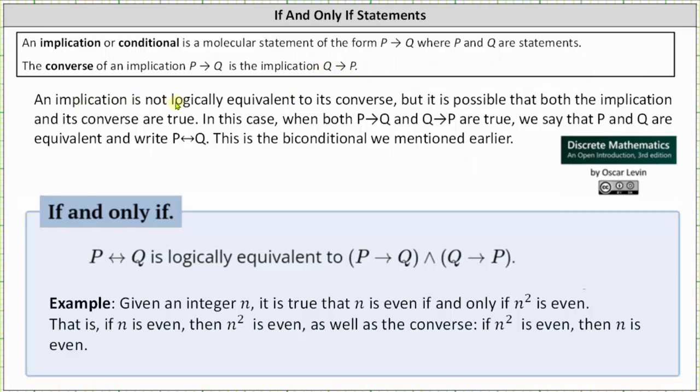An implication is not logically equivalent to its converse, but it is possible that both the implication and its converse are true. In this case, when both if P then Q and if Q then P are true, we say that P and Q are equivalent and write P if and only if Q. This is the biconditional we mentioned earlier.